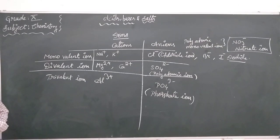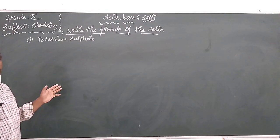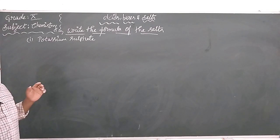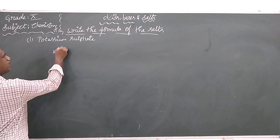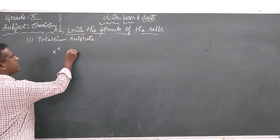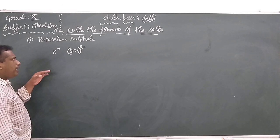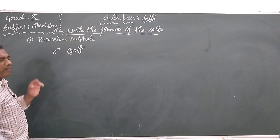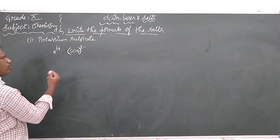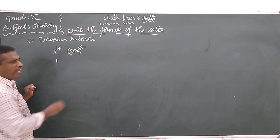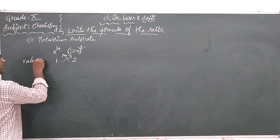Let us see the question: write the formula of the salt. The name given is potassium sulfate. Do we know the formula of potassium ion? Potassium ion is K+. Sulfate ion is SO4 2 minus. Now you try to convert into the formula. The valency of potassium is 1, and the valency of the sulfate group is 2. So exchange their valency — this is what we call the crisscross method.